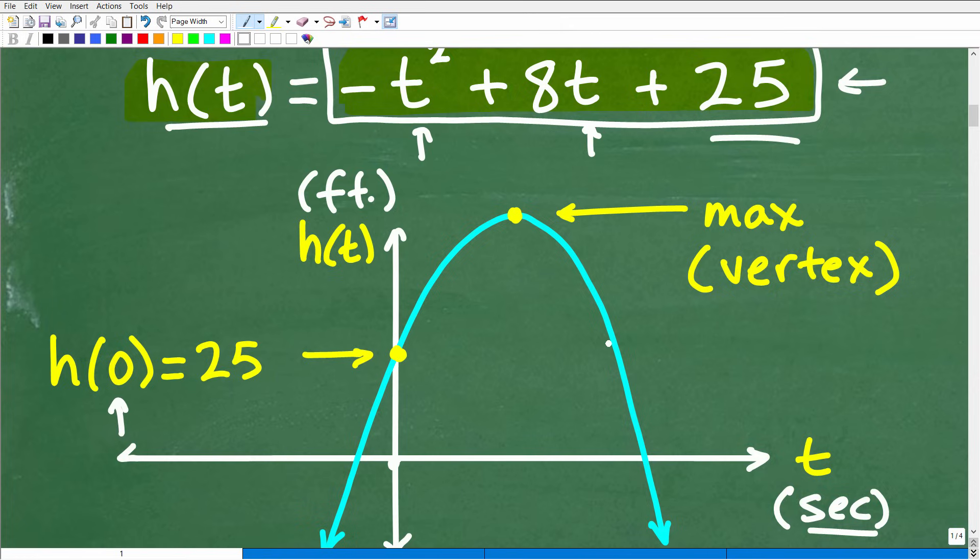What we're looking for is the maximum height of this ball, which is going to be at the vertex. In this case, it's a maximum, so we're looking for the particular, this specific vertex location.